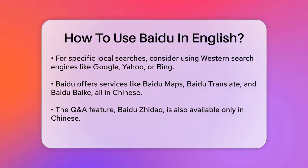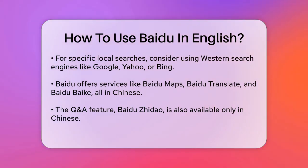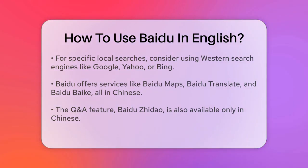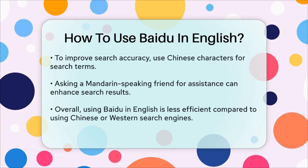Baidu does offer various services like Baidu Maps, Baidu Translate, and Baidu Baike, similar to Wikipedia, but these are all in Chinese. Even the Q&A system, Baidu Zhidao, is only available in Chinese.